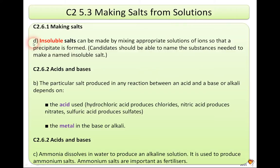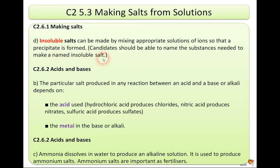Section D from the AQA syllabus says insoluble salts can be made by mixing appropriate solutions so that a precipitate is formed — something that drops out of solution. So unlike copper sulfate, which is clear and blue in water and dissolves, we're looking at something that does not dissolve. You need to be able to name the substances needed to make a named insoluble salt as a generic example.